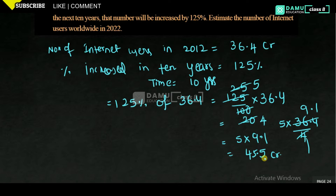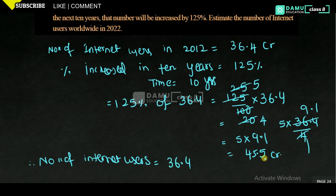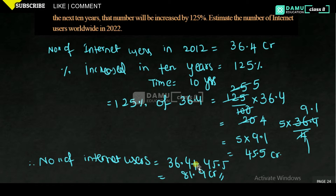Therefore, the number of internet users is equal to 36.4 plus 45.5, which gives 81.9 crores worldwide. They gave the percentage increase, we calculated the value for that increase, and then added it to the original. Thanks for watching, please subscribe.